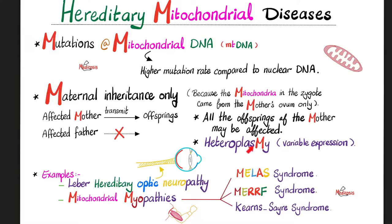Examples of hereditary mitochondrial diseases include the infamous Leber hereditary optic neuropathy, and mitochondrial myopathies, which include many diseases. Three examples are MELAS syndrome, MERRF syndrome, and Kearns-Sayre syndrome. In the last three videos, we talked about Leber hereditary optic neuropathy, MELAS, and MERRF syndromes.